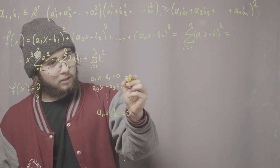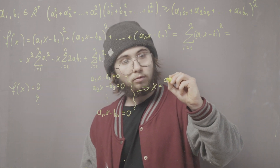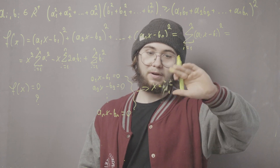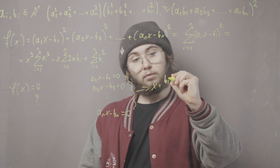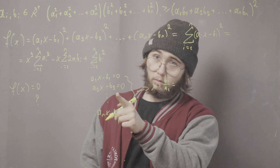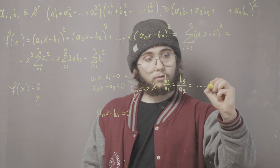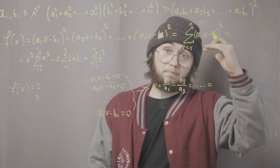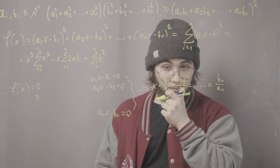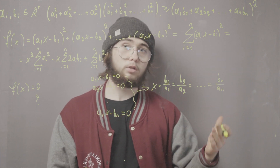This gives us that x would have to equal b₁/a₁, and also b₂/a₂, all the way up to bₙ/aₙ simultaneously. So we see there is at most one solution here — f(x) has only one particular value of x where it equals zero.